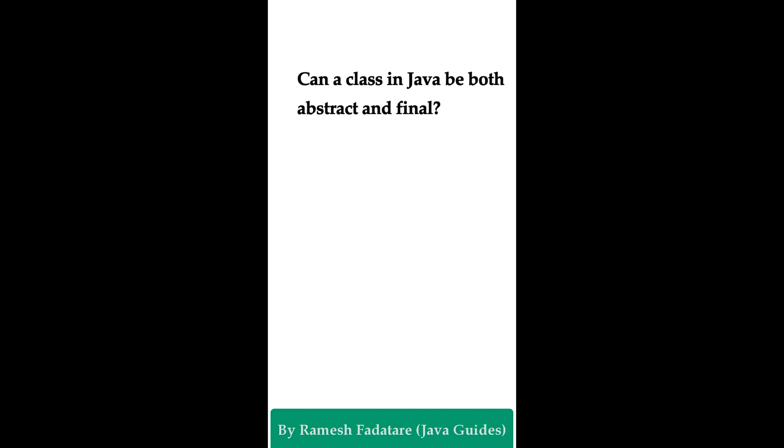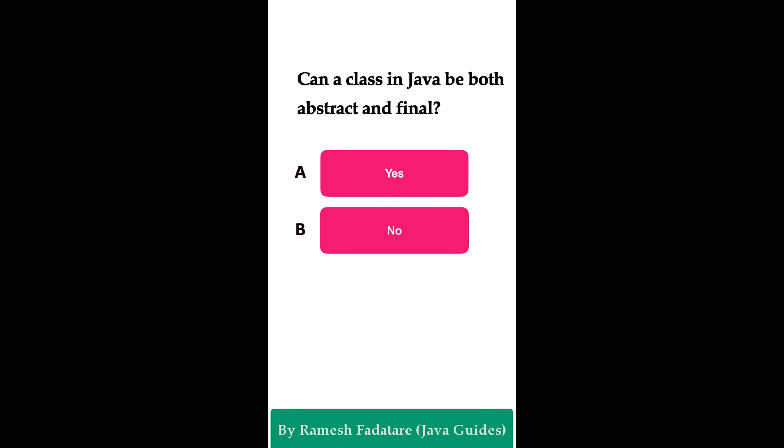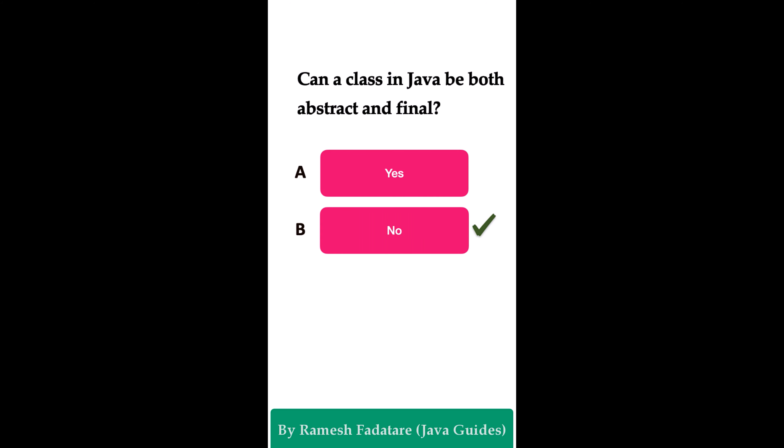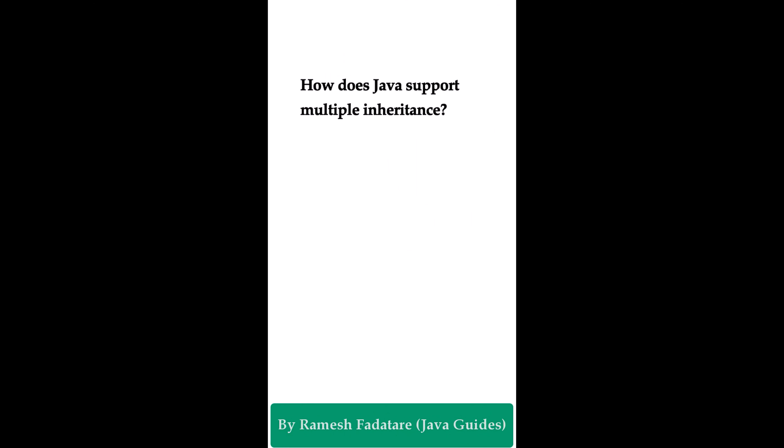Can a class in Java be both abstract and final? Option A: yes. Option B: no. The correct answer is no. An abstract class must be inherited and its abstract methods must be overridden with implementations. A final class cannot be inherited. Therefore, you cannot use both abstract and final keywords together on a class — a class in Java cannot be both abstract and final.